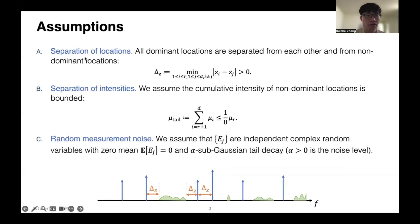We also use the following three assumptions, which are very common in the literature. The first one is that all the dominant locations, in other words, the locations of the signal parts, are separated from each other, like these blue arrows, and also separated from the non-dominated locations. Note that here, we do not assume the non-dominated locations, the bias part, are also gapped, so the bias part might be gapless, and the separation is quantified by the parameter Δz.